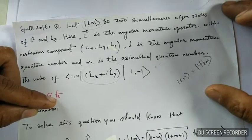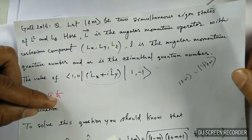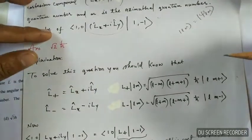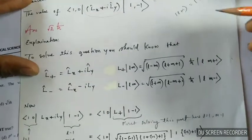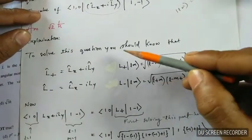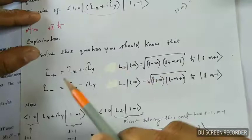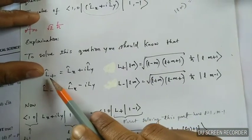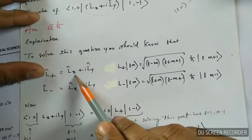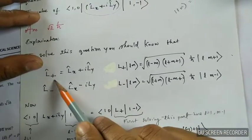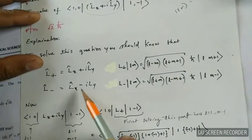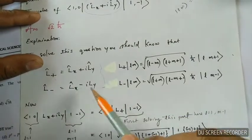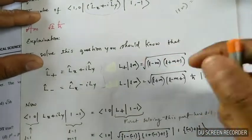Let's see how we can arrive at this answer. Before solving this question, you have to know some basic concepts. The operator L₊ equals Lx plus iLy, and if there is a minus in place of plus, then L₋ equals Lx minus iLy. These two operators are quite important in quantum mechanics and you should remember them.